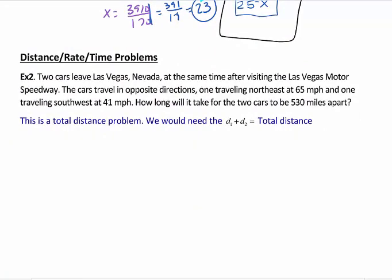Let's shrink this down so you can see the whole problem. Again, pause this and read it. There will be two types of distance rate time problems that you're going to see in this section. One will be what we call the total distance problem, where you have one going one direction, the other going the other direction. And the second type will be what they call same distance, where they're actually catching up to each other.